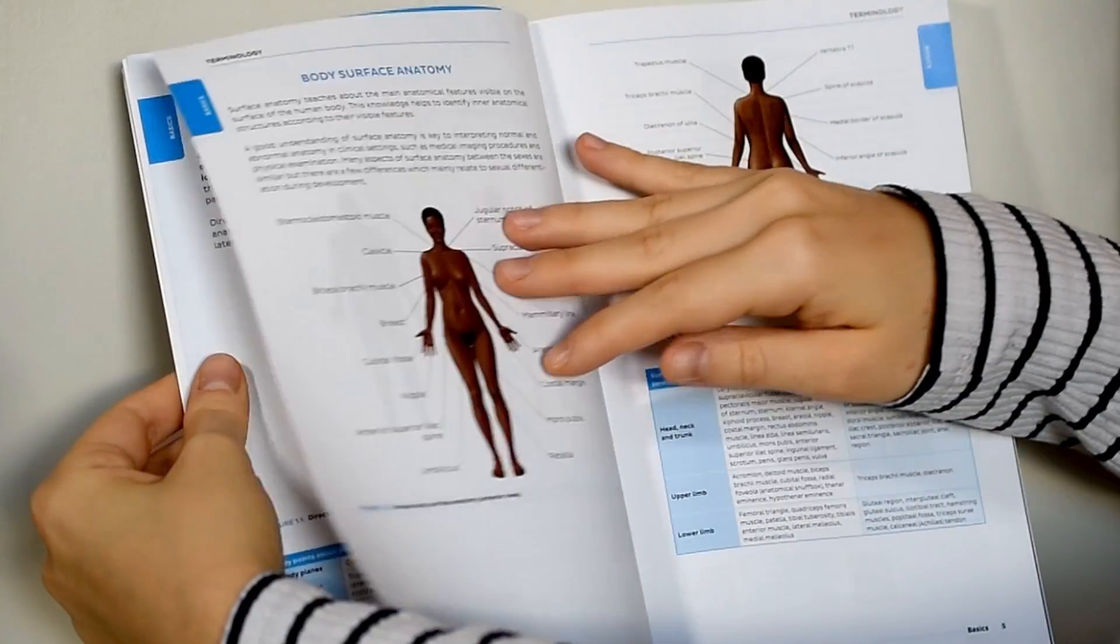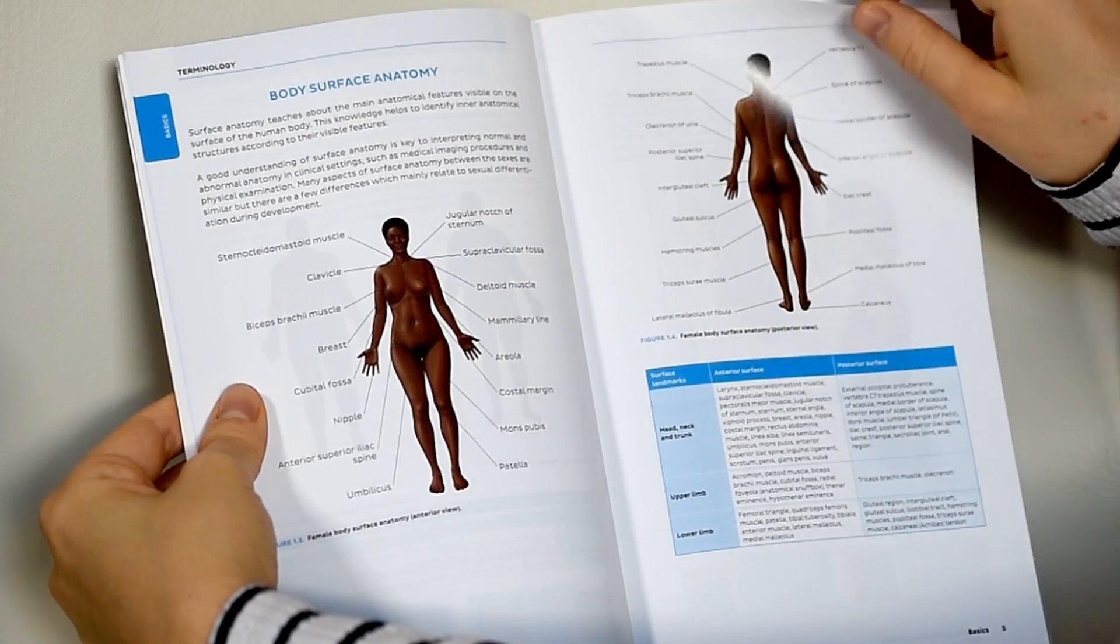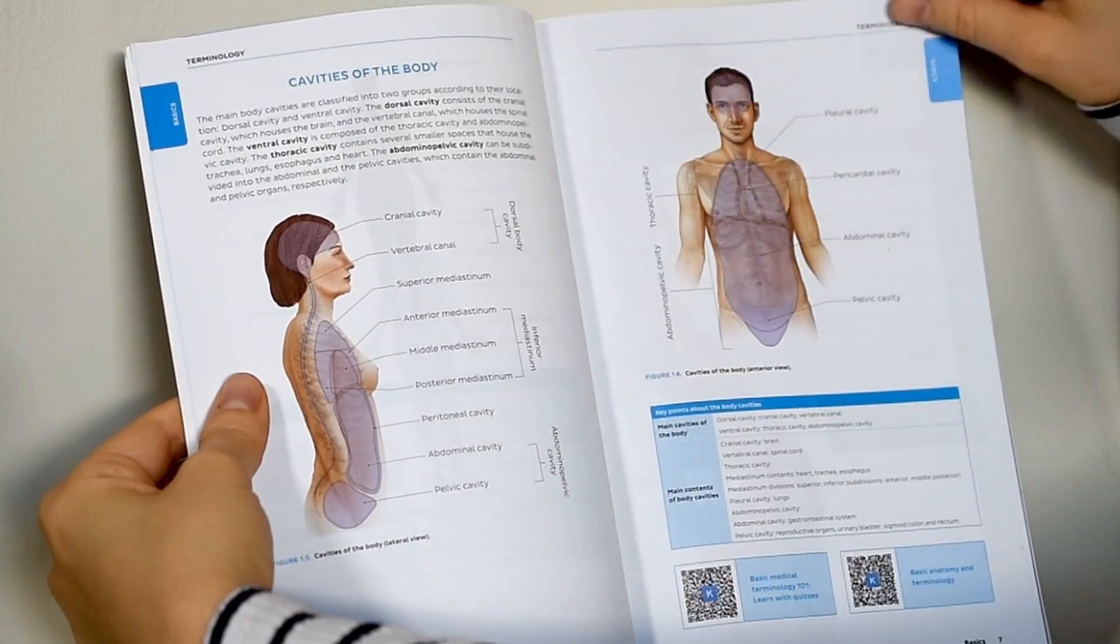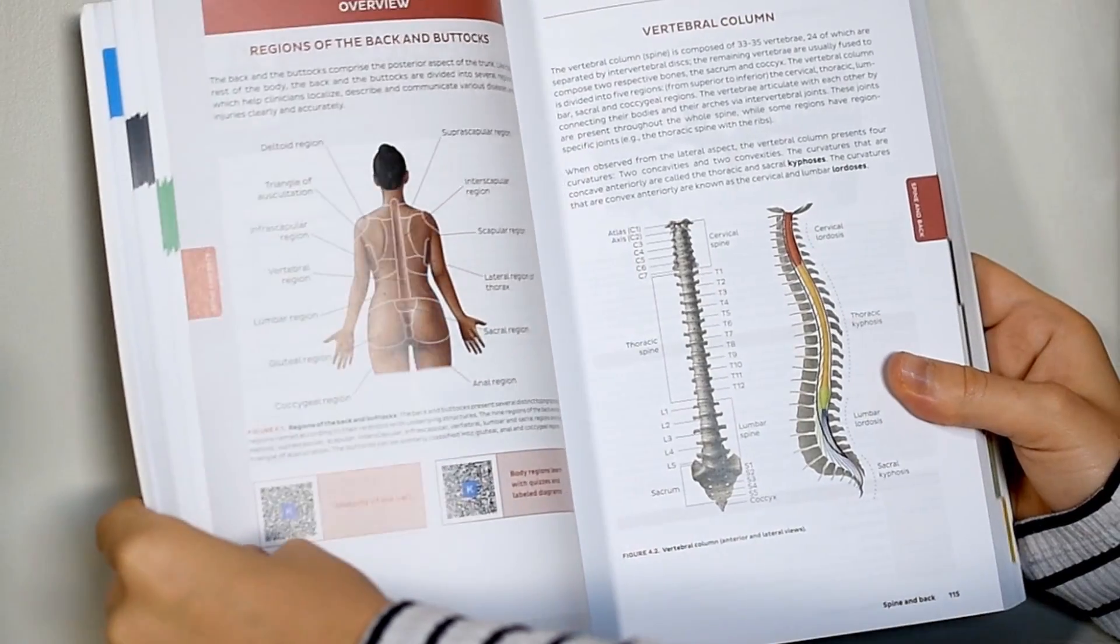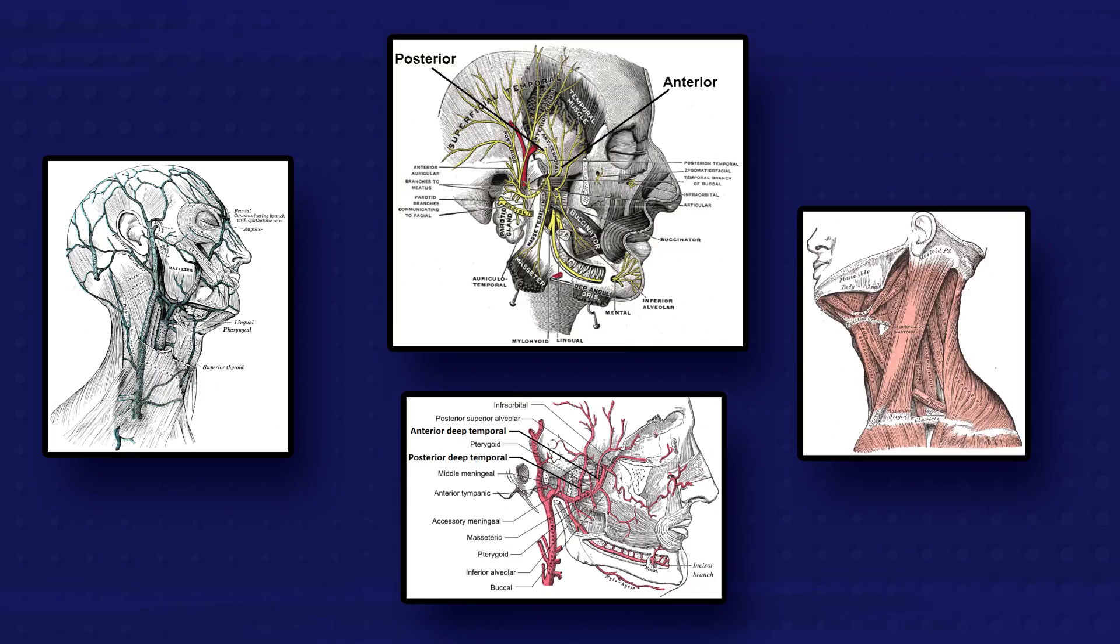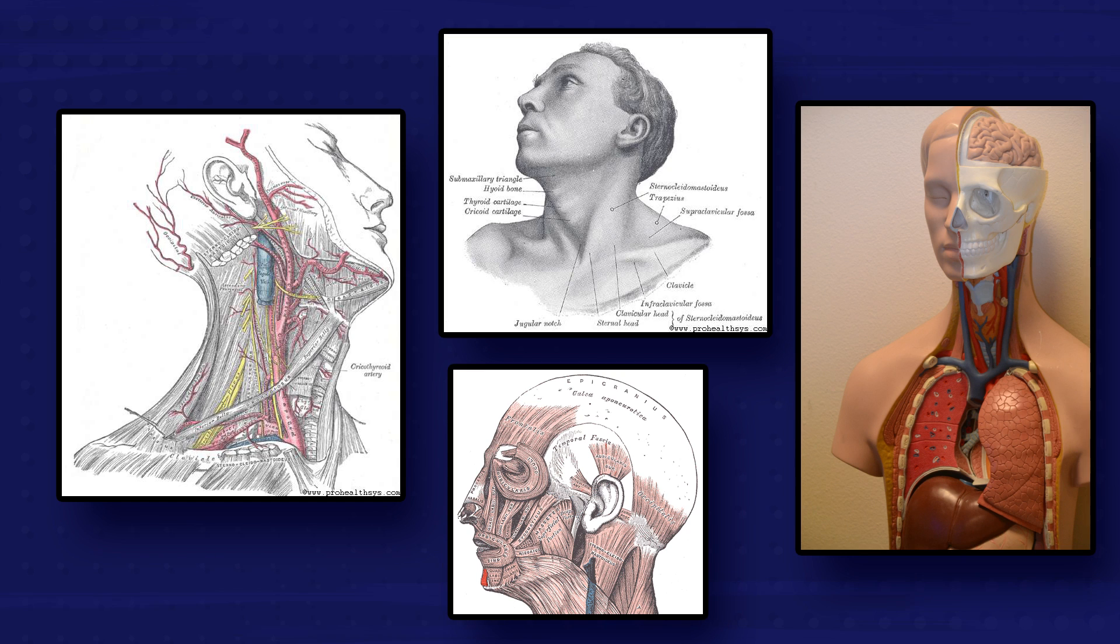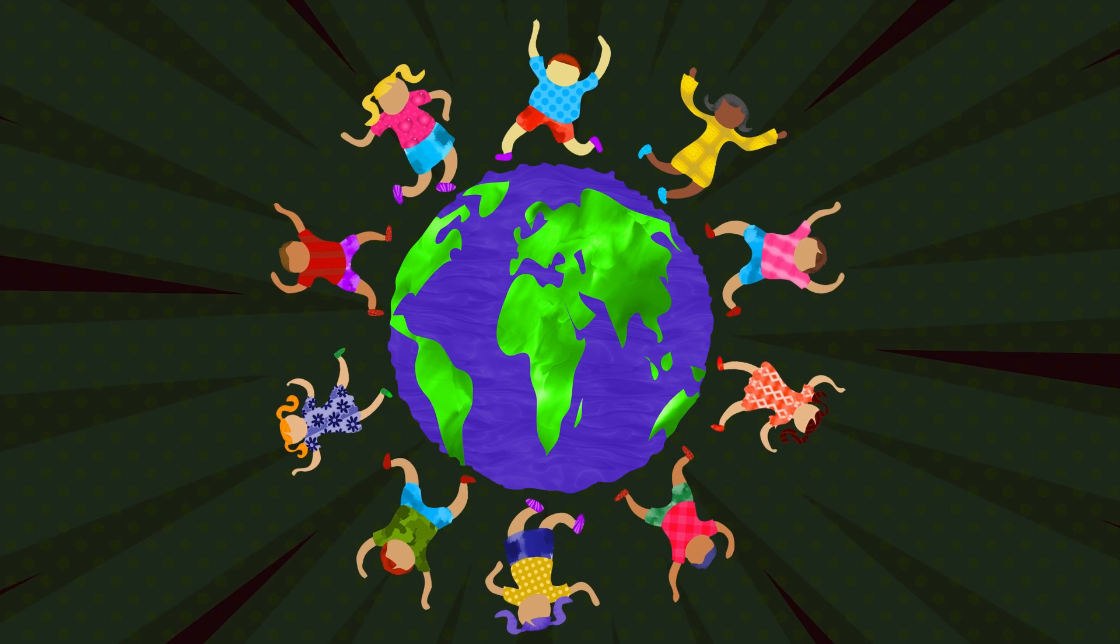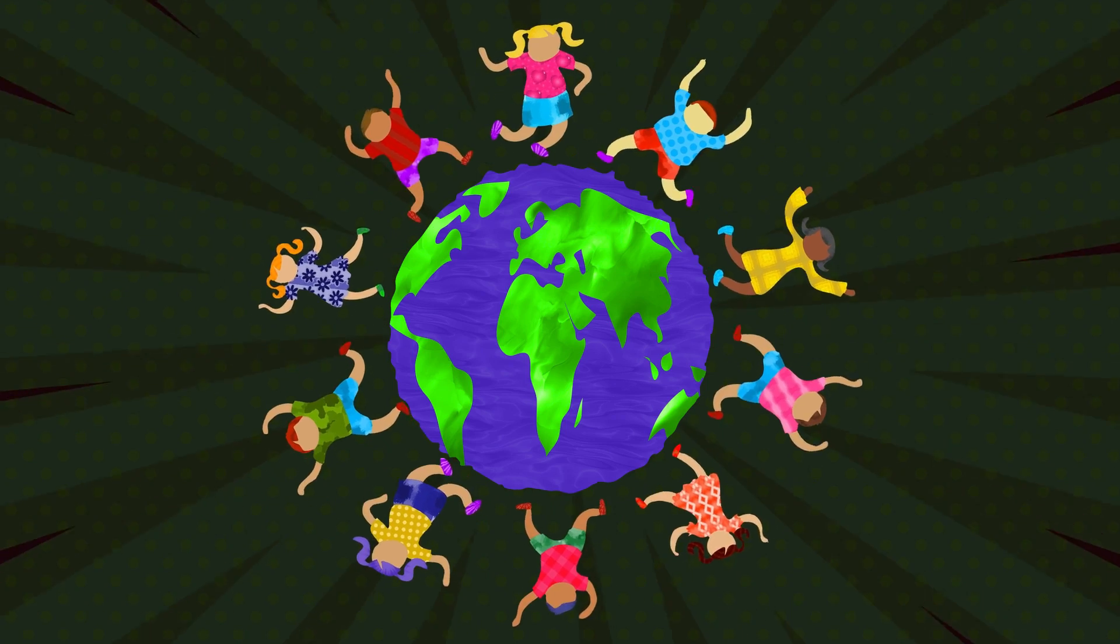Another thing I really appreciate about this atlas is that it is the first anatomy atlas ever to feature diverse anatomical models with different sexes, races, and body types. As you've probably noticed, most resources only teach using a white male model, so Kenhub's atlas promotes inclusive and equitable learning.